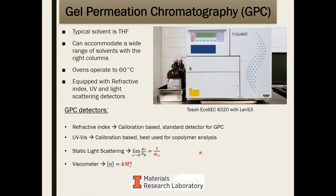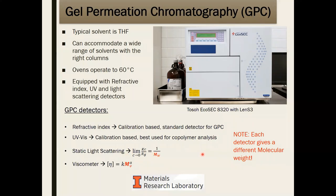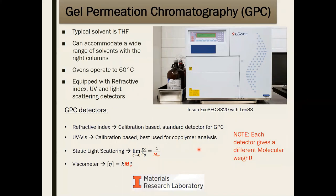An important note: each detector, because of how it works, will give you a different molecular weight. Don't worry about that — just be consistent with which detector you use. If you only have a refractive index detector, that's fine; the polymer community understands its strengths and weaknesses. As long as you report which detector and calibration you used, you're fine. The same applies to light scattering. In essence, GPC is used to analyze molecular weights of polymers, correlating to how many monomers are linked in a chain.